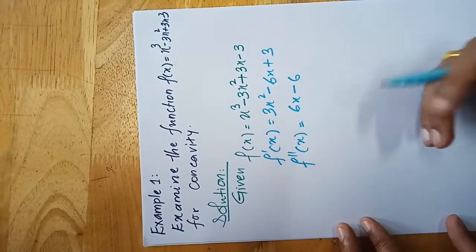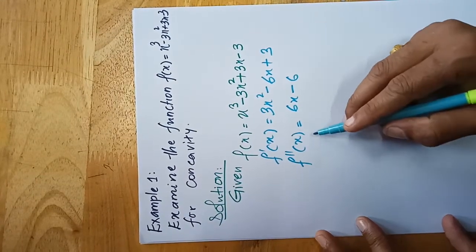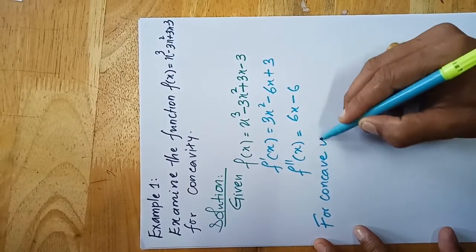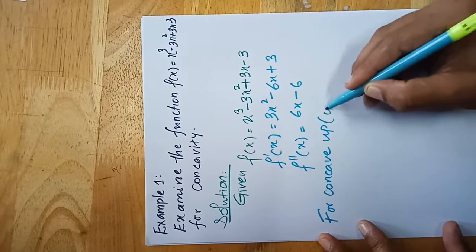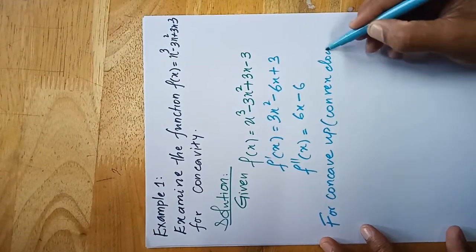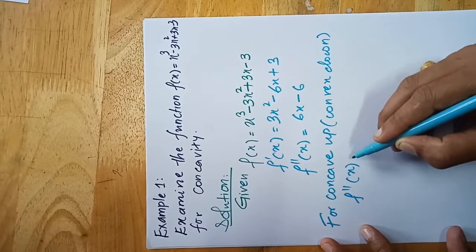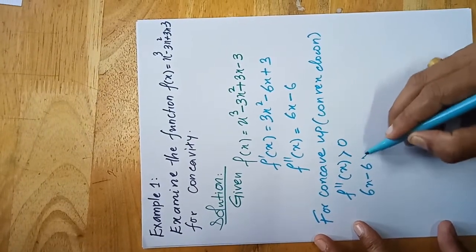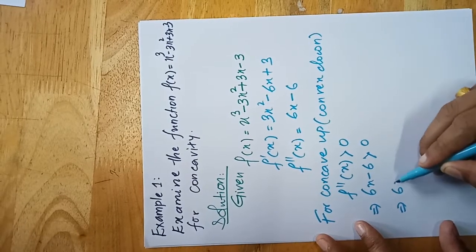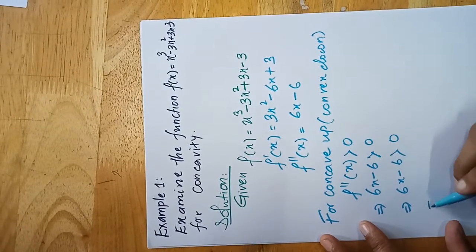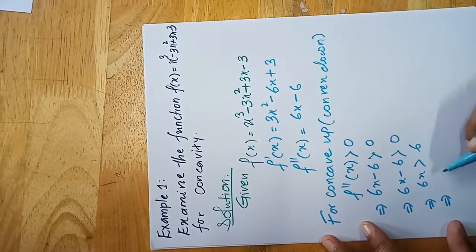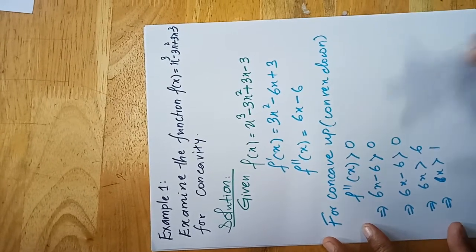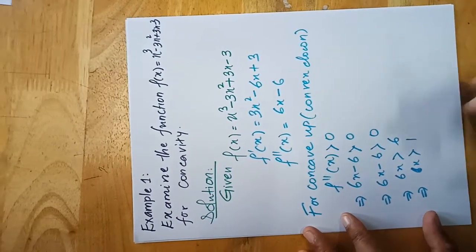For concave up, set f''(x) greater than zero: 6x − 6 > 0, which implies 6x > 6, which implies x > 1. So for the function to be concave upward, the value of x must be greater than one.